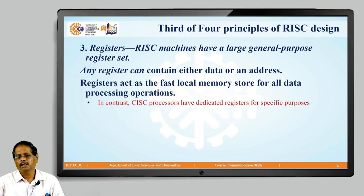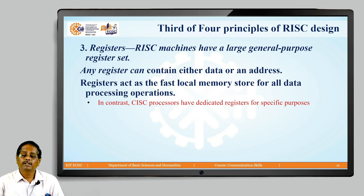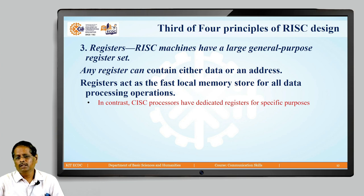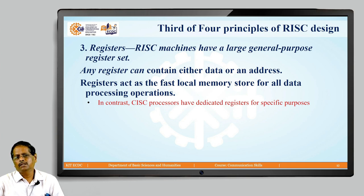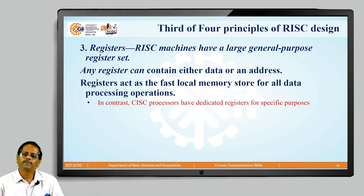RISC machines generally use a large number of general purpose registers compared to CISC, which offers very limited registers — like 8 or so — while RISC offers 16 or more general purpose registers. The advantage is that you bring all required data into the registers, process it, and then write back to memory. This substantially reduces memory operations and all computations are done on registers, so speed improves. In contrast, CISC processors have dedicated registers for specific purposes and operate much more on memory, resulting in more costly memory cycles and reduced speed.